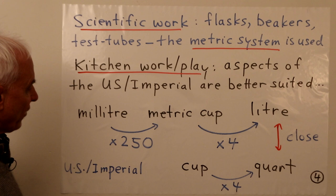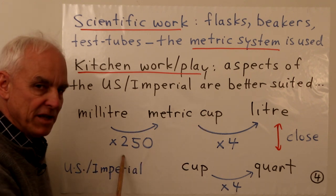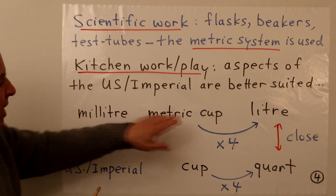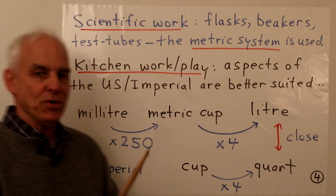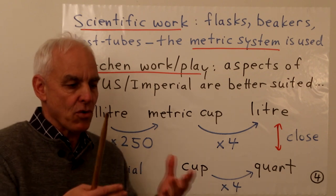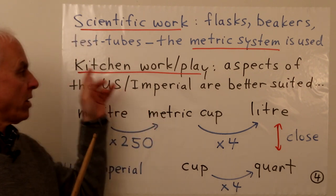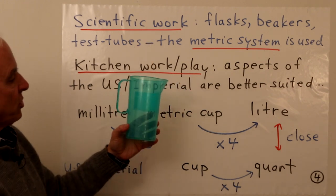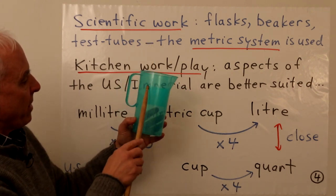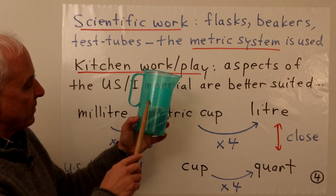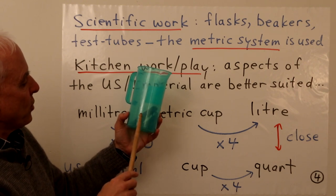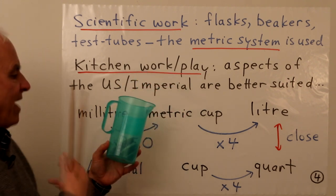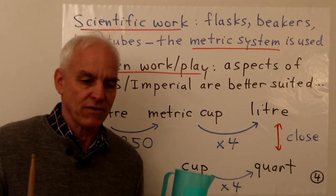It follows that a metric cup consists of 250 milliliters, because 250 times four is 1,000. We're appropriating a unit from the US/imperial system into the metric system, especially useful in the kitchen. Here is a beaker with markings at 750, 500, and 250 — but also showing one cup, two cups, three cups, four cups. So the notion of a cup is a useful additional tool for metric kitchen work.